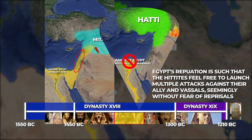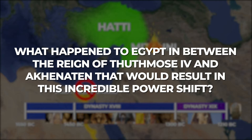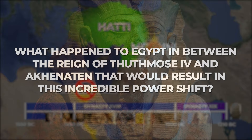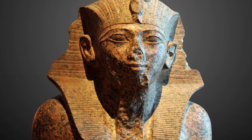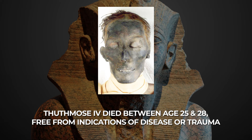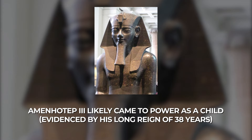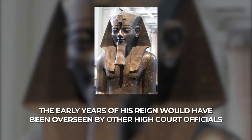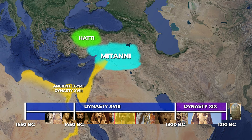What happened to Egypt between the reign of Thutmose IV and Akhenaten that would result in this incredible power shift? The death of Thutmose IV was, apparently, premature. Examination of his mummy has led scholars to assume a time of death between 25 and 28 years of age, free from indications of disease or trauma. The result is that his successor, Amenhotep III, likely came to power as a child, evidenced by his long reign of 38 years. If this is the case, then the early years of his reign would most probably have been overseen by other high court officials, perhaps his mother or one of the viziers of his father, Thutmose IV. It's during this time that the power shift begins to take place.